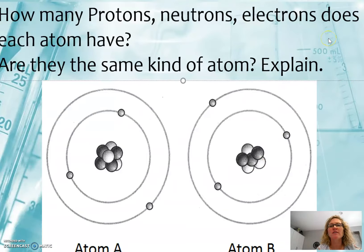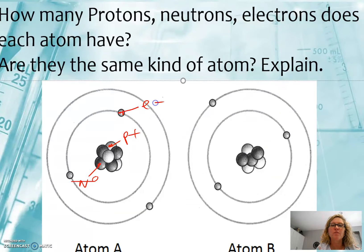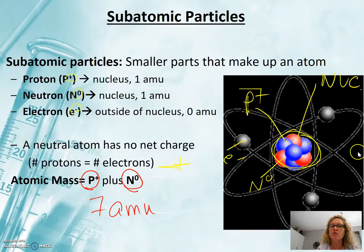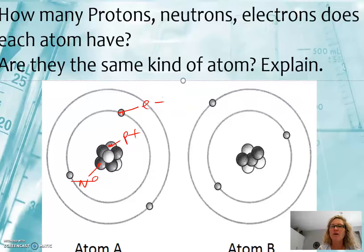Looking at the protons, neutrons, and electrons in these models: in this model the white represents a proton and the dark represents a neutron, with electrons orbiting outside. Notice that in this model the electrons are orbiting in rings, which is a little different from the previous one where electrons orbit in more elliptical orbits. It's actually more like the elliptical model, but remember these are just models — they are not exactly the way electrons orbit.